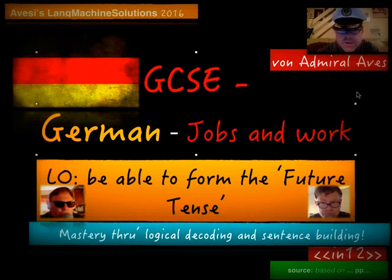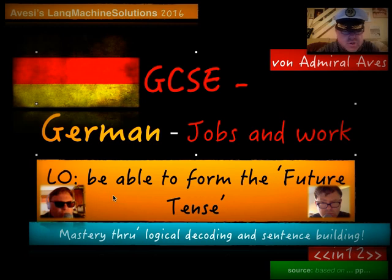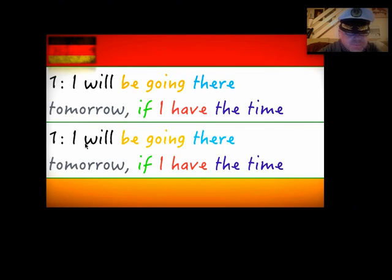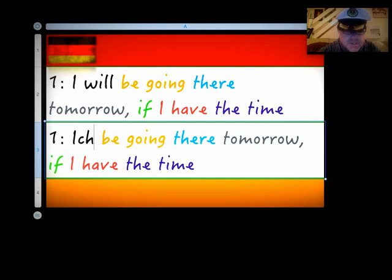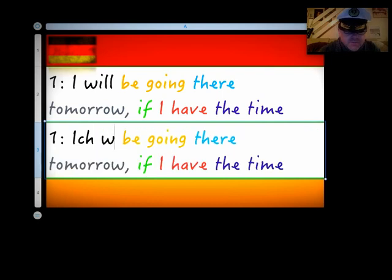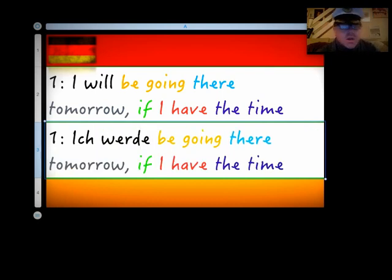Okay, ladies and gentlemen, Admiral Aves here, ready to talk about being able to form the future tense. So, now let's have a look at this sentence here. 'I will' is 'ich werde.' So we've got 'ich werde,' meaning 'I will.'